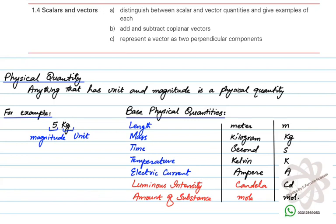In your syllabus, five important base physical quantities are length, mass, time, temperature, and electric current. You cannot study any physical quantity that does not have these as part of them. Luminous intensity and amount of substance are two additional physical quantities that will just be named in your syllabus.